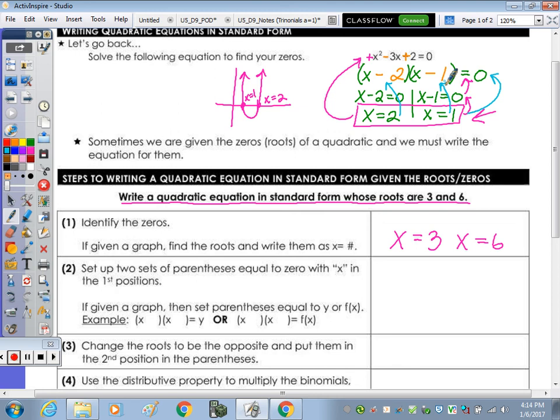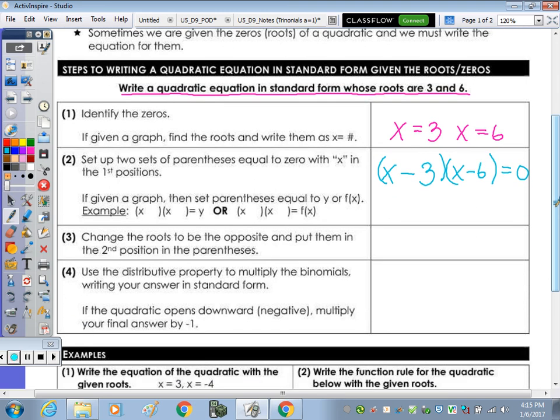So step number 2, set up the two parentheses equal to 0 with x in your first position. So this is the next step we're going to do. And since the root was 3, this must have been x minus 3. If this root is 6, it must have been x minus 6 as it's the opposite sign. Change the roots to be the opposites and put them in the second position. So really these two go with that.